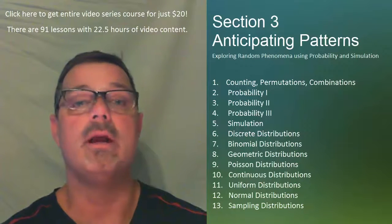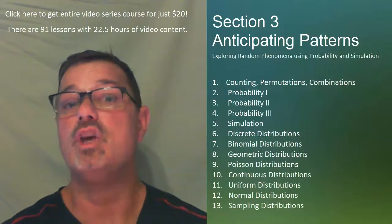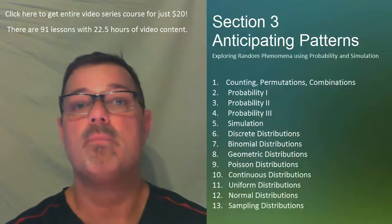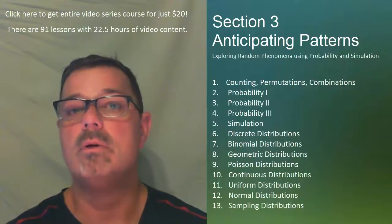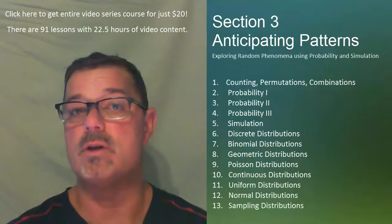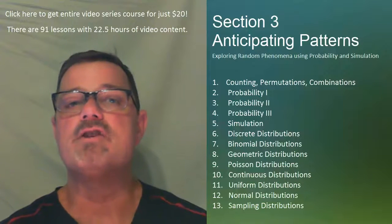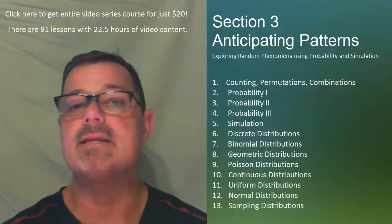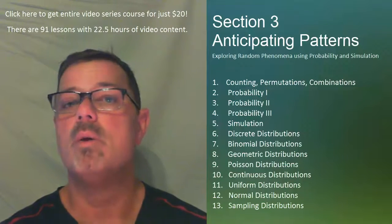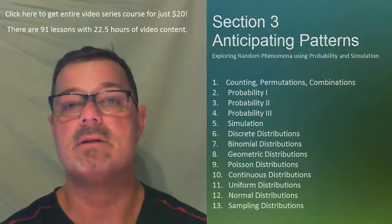These include binomial, uniform, geometric, Poisson, and normal probability distributions. We finish the section investigating sampling distributions, which is the fundamental key to statistical inference.